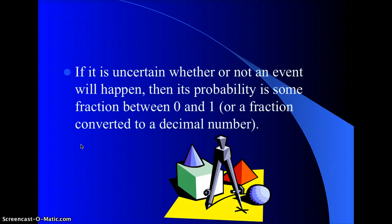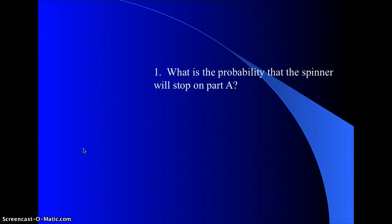If it is uncertain whether or not an event will happen, then the probability is somewhere between 0 and 1, and it's usually written as a fraction or it can be converted to a decimal or a percent. We're going to be looking at it as a fraction.